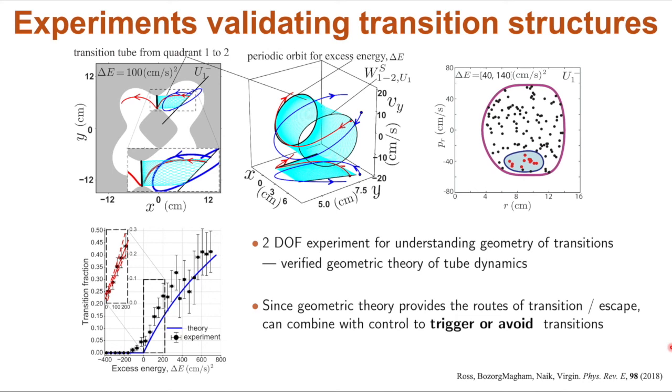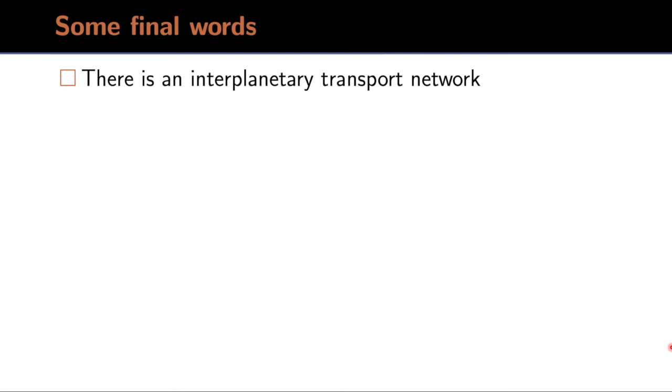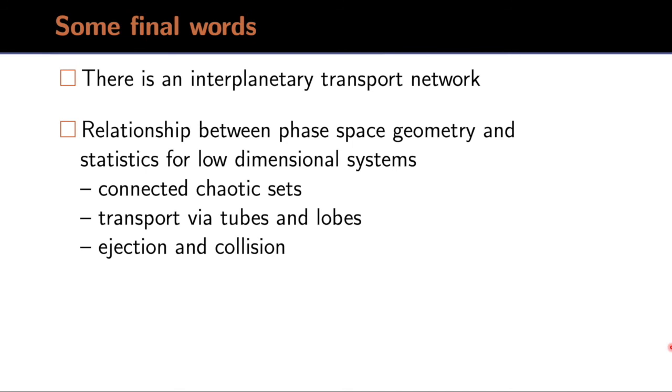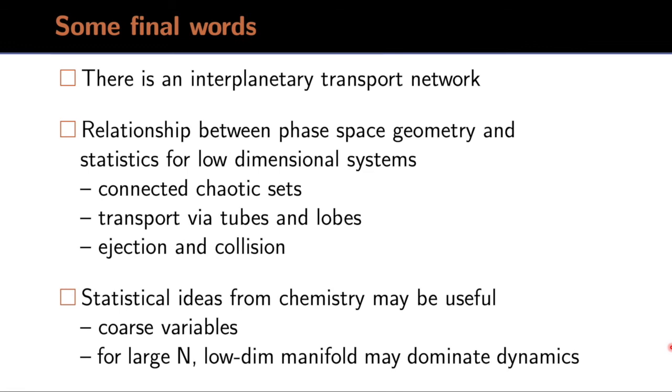Some final words. We've reviewed that there really is an interplanetary transport network, and it's related to these dynamical systems structures. So the phase-based geometry, as well as the statistics related to that geometry, are a pretty low-dimensional system. There's interesting relationships between the connected chaotic sets and the probability of finding an object at a particular location. There's transport via tubes and lobes. We can also relate these to things like ejection and collision, and also use statistical ideas from chemistry.